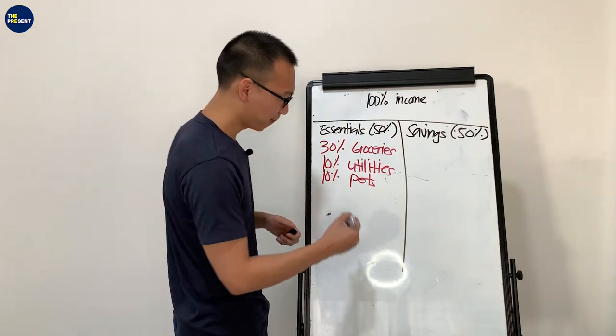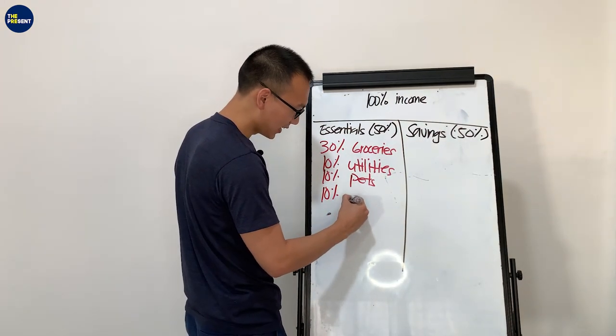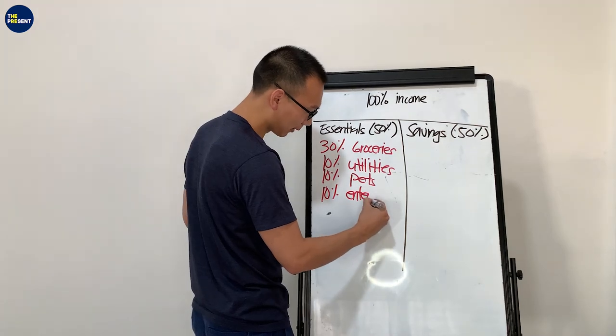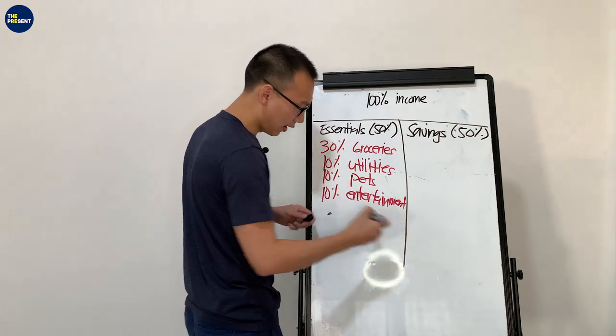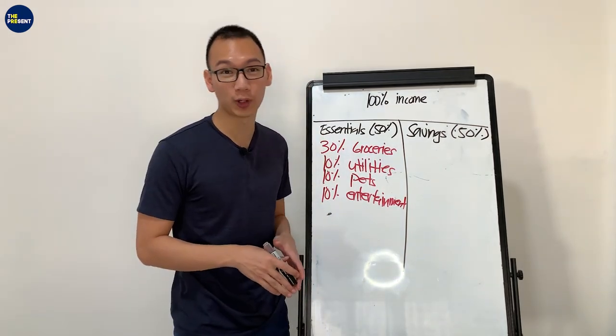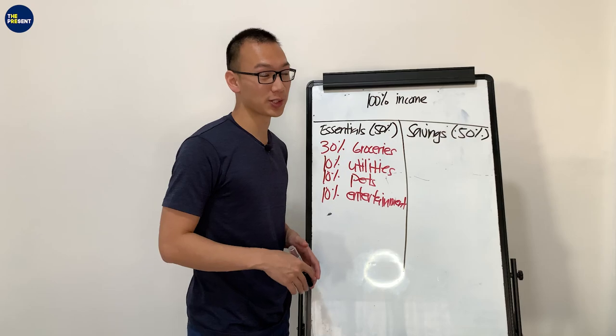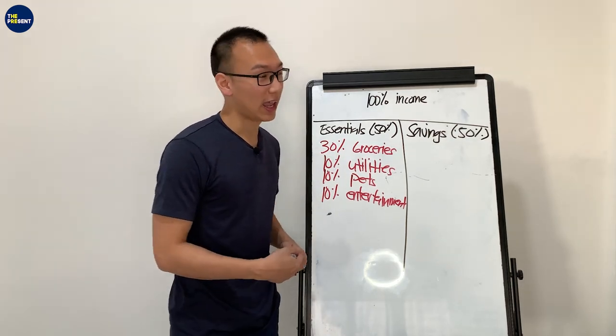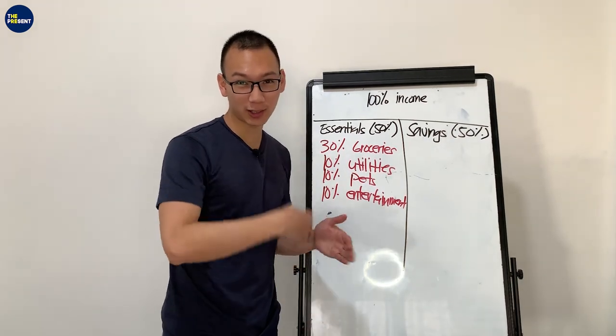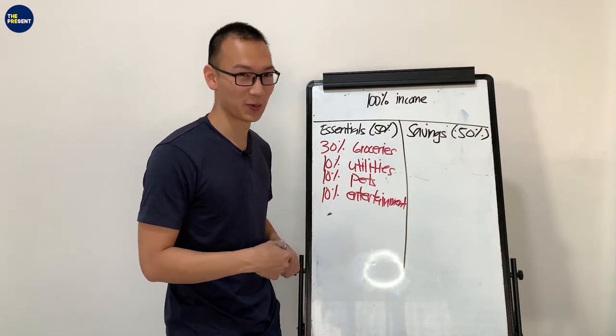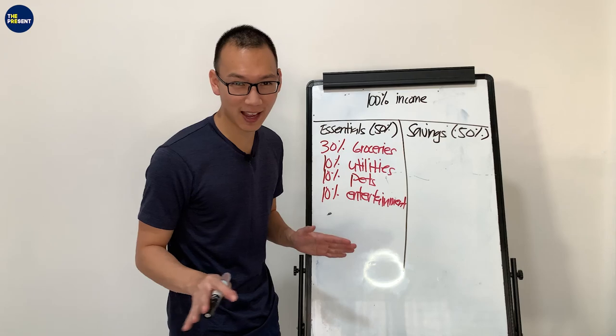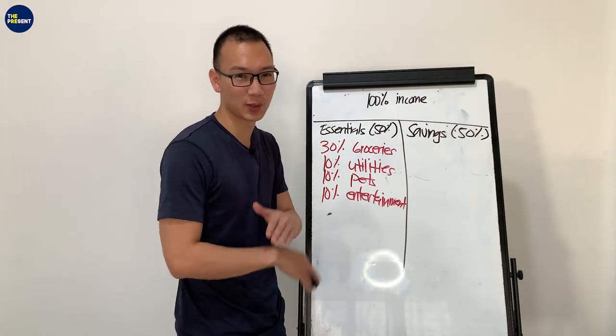And then 10% is for our entertainment. When we say entertainment, we're referring to Netflix or our subscription to Spotify and my subscription to Dota Plus because I'm playing Dota. I'm not good, I'm just an average player. I just do it for fun and things like that. So 10% of that goes to entertainment.